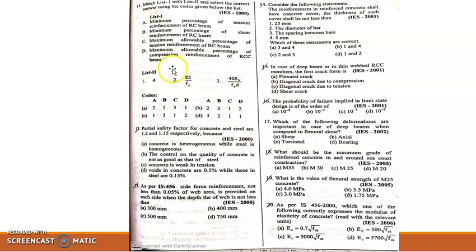Then C, maximum allowable percentage of tension reinforcement of RCC beam is 4 percentage. Then option D, maximum allowable percentage of compression reinforcement of RCC beam is also 4 percentage. So option A is the correct option.